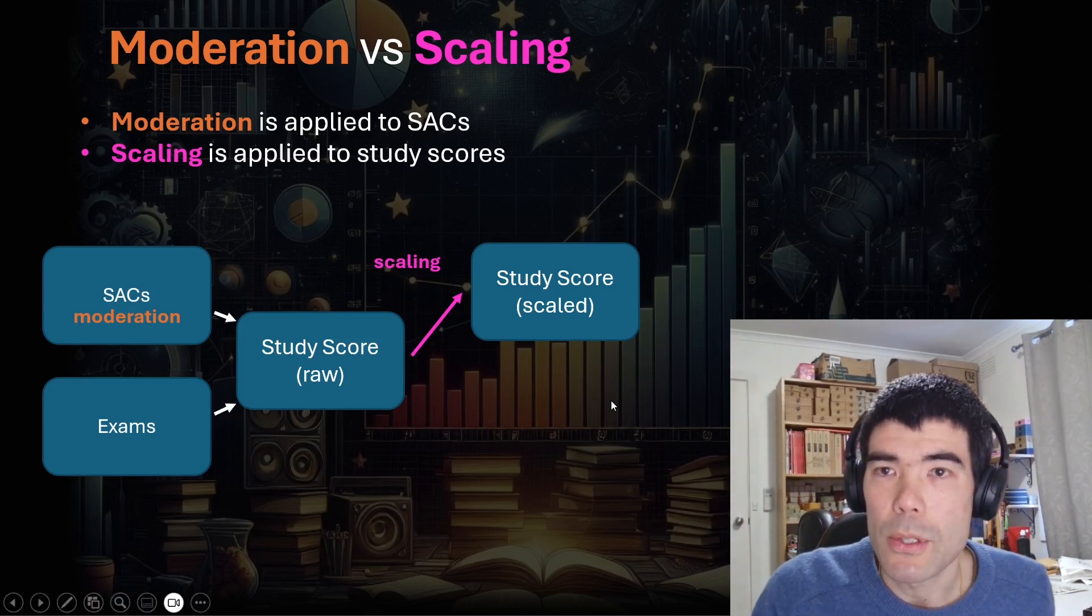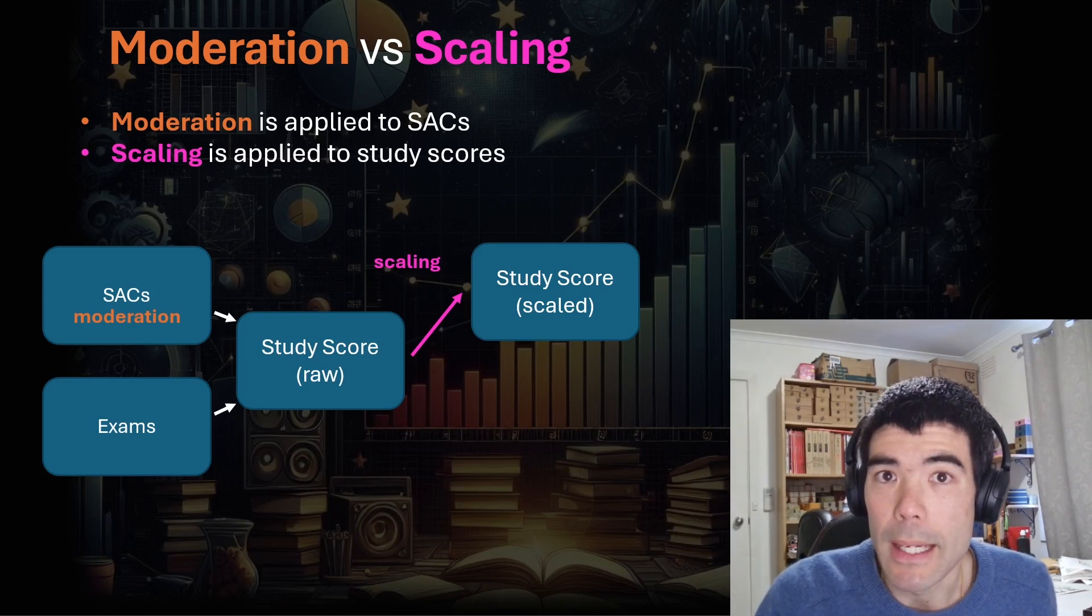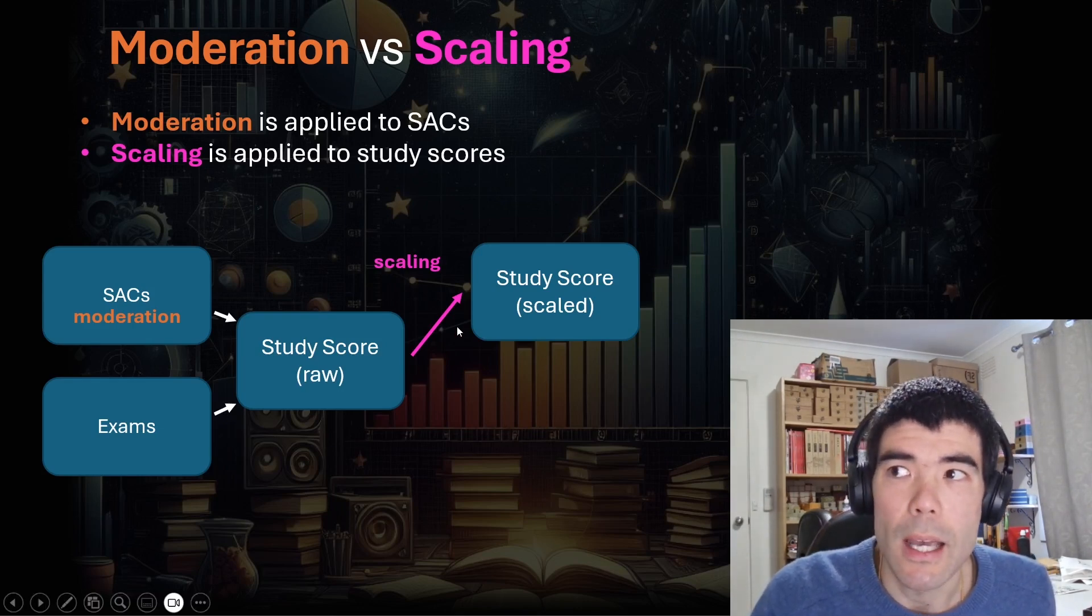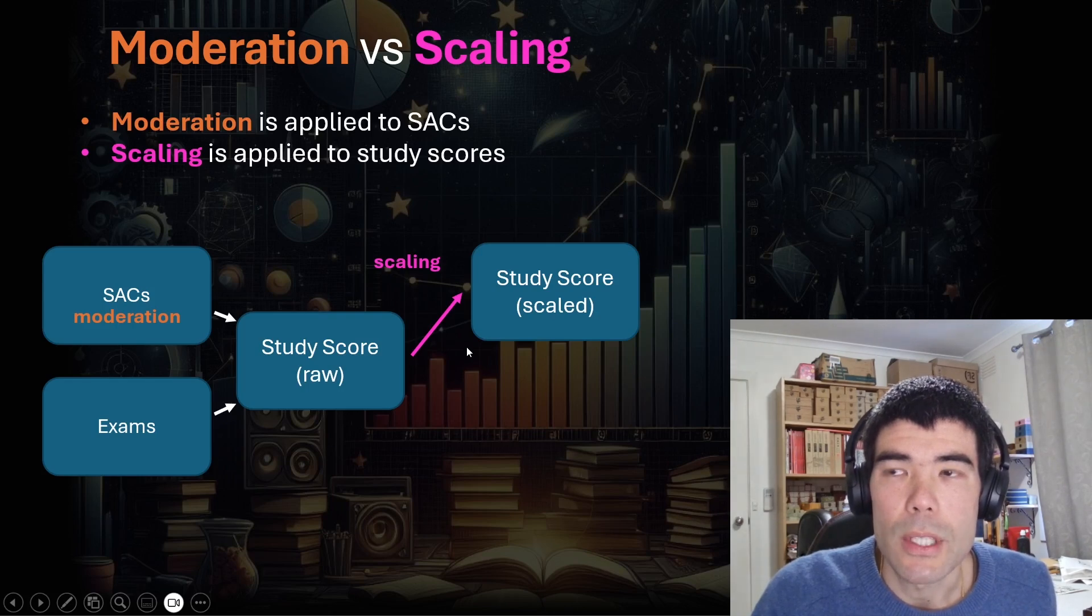So we'll talk about the way that works a bit later, but we'll start by talking about study score scaling. So this is what happens to the study score. Study scores are calculated with an average of 30, median of 30 also, and maximum possible is 50, but then they get scaled. And they get scaled to take into account the difference between each subject and the different students sitting each subject.